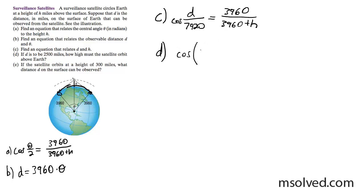So cosine of, and we had 2,500 miles over 7,920 is equal to 3,960 over 3,960 plus h. Now what we're going to do here is I'm going to figure out what the cosine of this angle is. I'll be right back.